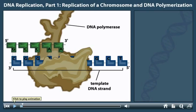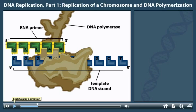DNA polymerases catalyze the synthesis of new DNA strands from a DNA template. DNA polymerases require a pre-existing RNA or DNA strand, the primer, to initiate new DNA synthesis. These polymerases add deoxyribonucleotides only to the three prime end of a growing strand.